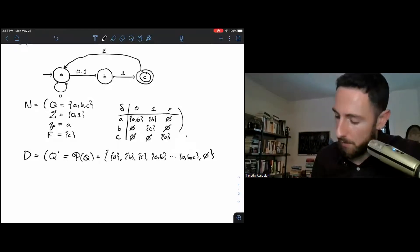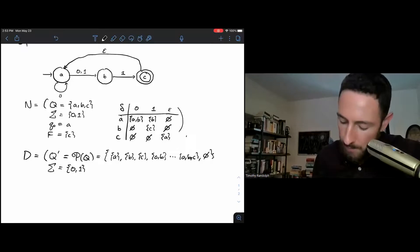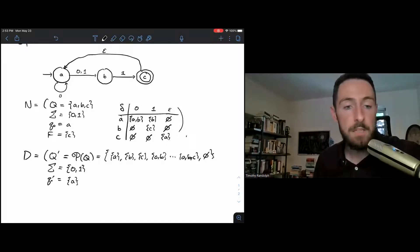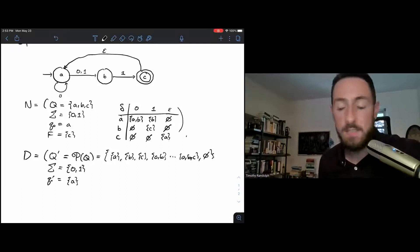We'll draw this in a picture down below in a moment. Our alphabet for D is exactly the same, it's zero one, because that's what we'll be transitioning on. Our new start state will be A, or strictly speaking, it'll be the set containing A, because when we start our NFA, the set of states we occupy is just the one state A.